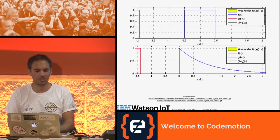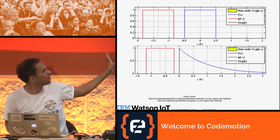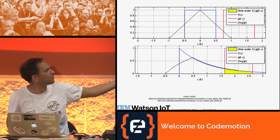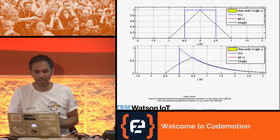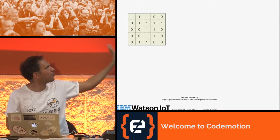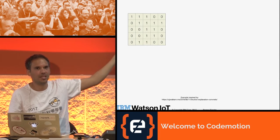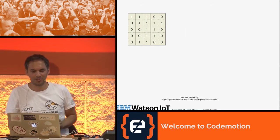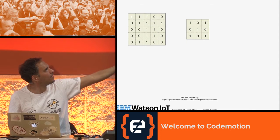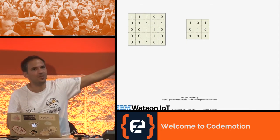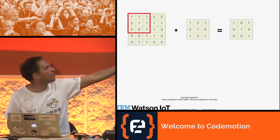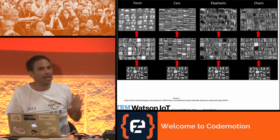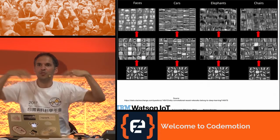Convolution mathematically is just applying one function over another function — the black line is the result of the convolution. This idea is taken into neural networks for image recognition. Consider this a black-and-white image: zero stands for black and one for white. You convolve another image over it — this other image is a filter, which you will train. You basically scan over the image, apply the filter, and while applying it you adjust it to get good results. In each layer you are training and learning those filters.